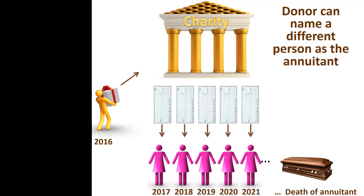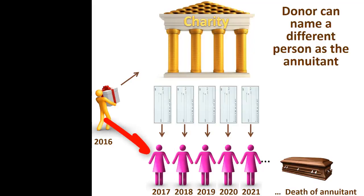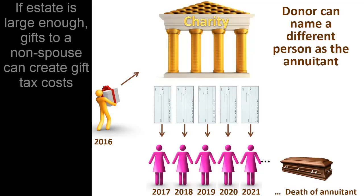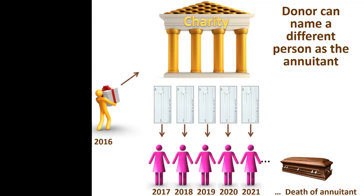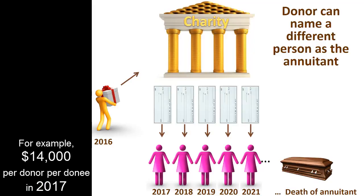The typical charitable gift annuity makes lifetime payments to the donor. However, the donor may instead select someone else to receive payments as the annuitant. This is a potentially taxable gift if given to a non-spouse, so for a donor whose estate is large enough to be concerned with estate taxes, such gift tax considerations must be considered. Although, as discussed later, such gifts can be reduced by the annual present interest exclusion, because gifts of immediate annuities are considered to be gifts of present interests.